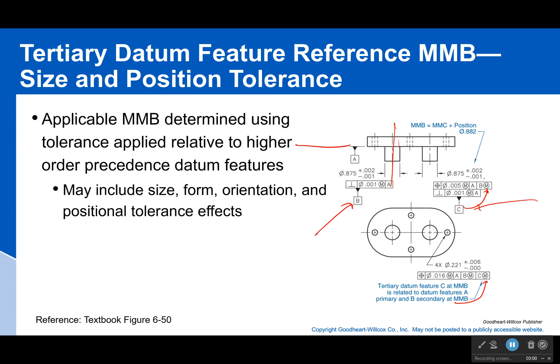If we look at just this position tolerance, that true boundary is going to equal the true condition plus the tolerance. So 0.877 plus the tolerance gives us 0.882 — that's a 0.005 tolerance. But that's just for that one feature.